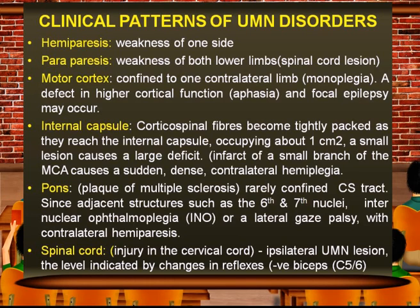In spinal cord upper motor neuron lesions, the level of the lesion is indicated by changes in the reflexes, such as negative biceps or triceps reflexes at the level of involvement.